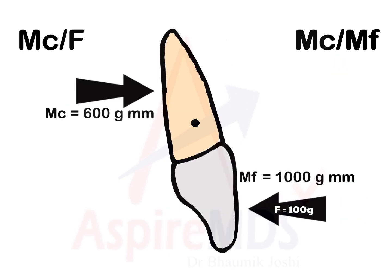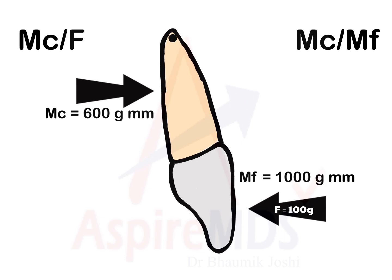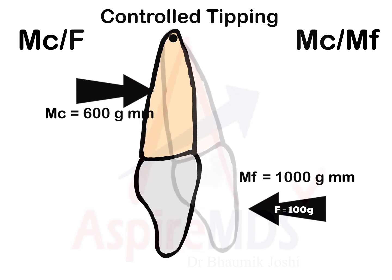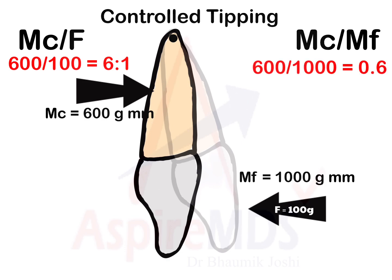If we introduce a counterclockwise moment of couple of around 600 gram-millimeters, although it cannot fully oppose the tipping movement, it is sufficient to decrease the amount of tipping by moving the center of rotation to the apex of the root. This type of movement is known as controlled tipping. Here, the moment of force is 1000 gram-millimeters and moment of couple is 600 gram-millimeters, so the moment to force ratio is 6:1 and the moment of couple to moment of force ratio is 0.6. For controlled tipping, this ratio is more than 0 but less than 1. This movement is indicated when retracting excessively proclined maxillary incisors.